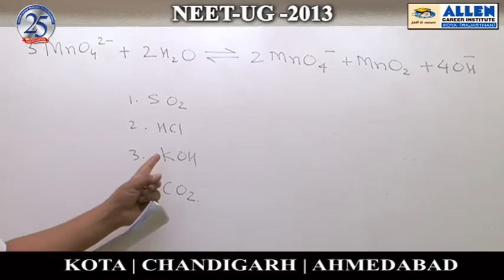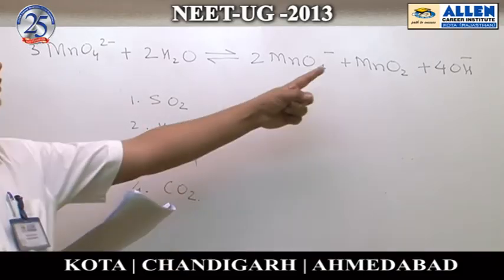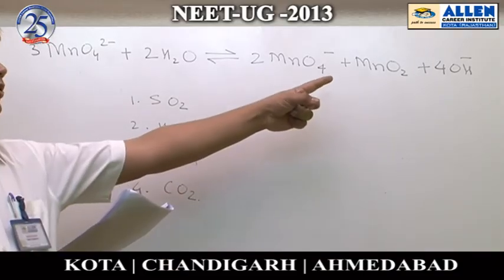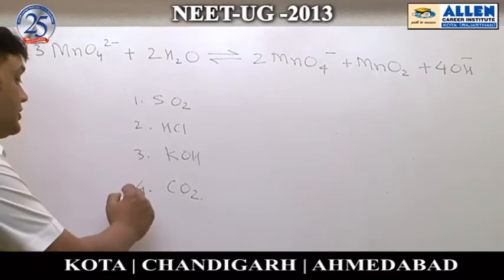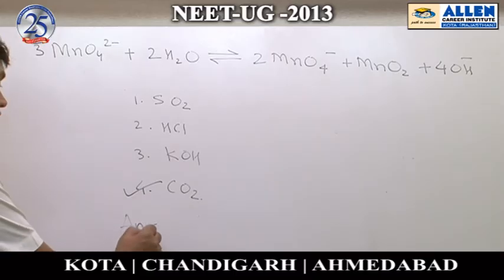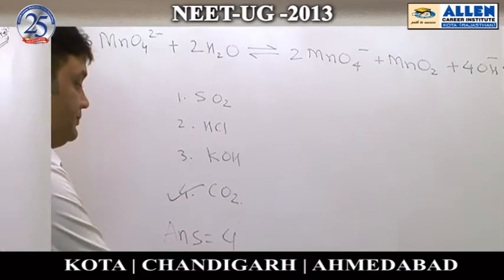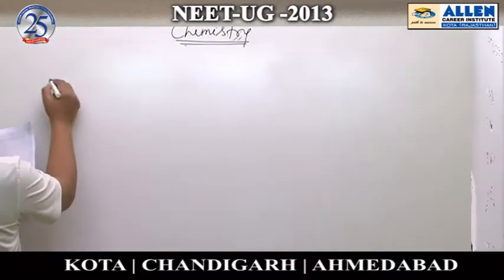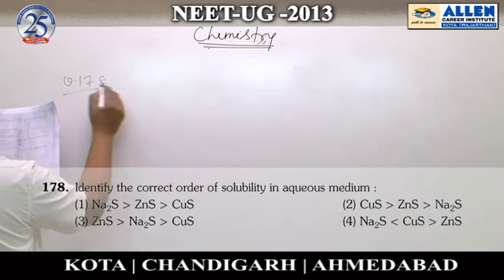There is no point in taking KOH to remove the OH⁻ ions. Therefore, the most appropriate answer is option 4, which is CO₂.